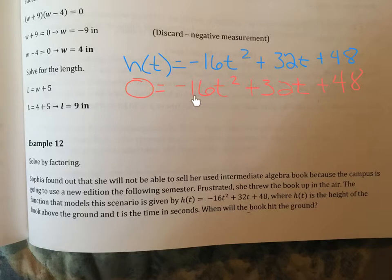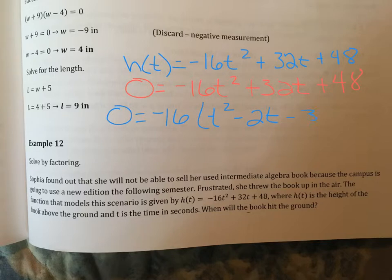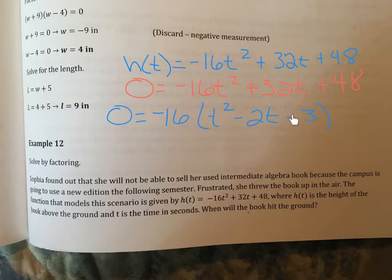The GCF here is 16 — and because of the negative sign, we'll factor out negative 16. Factoring out negative 16 leaves t squared minus 2t minus 3. When you factor out a negative GCF, you're dividing by a negative, which changes the signs inside. We want the lead coefficient to be positive, which is why we factored out the negative to make t squared positive. Now we have a standard trinomial.